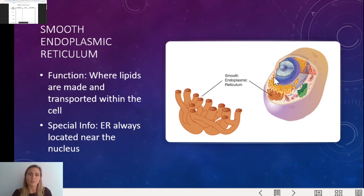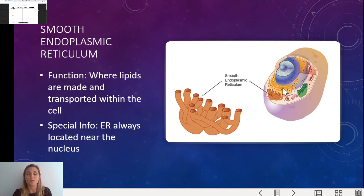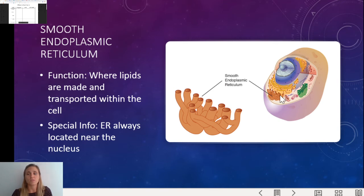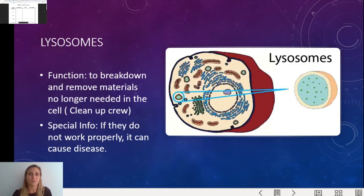Now the smooth ER — we have the nucleus, the rough ER looking like a maze attached to the nucleus, and then the smooth endoplasmic reticulum. The smooth ER is where we make and transport fats. So: rough ER has ribosomes, ribosomes make proteins, so rough ER makes and transports proteins. Smooth ER makes and transports fats in the cell. Both rough ER and smooth ER are always located near the nucleus.